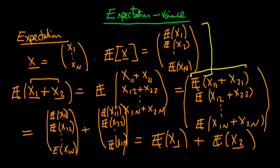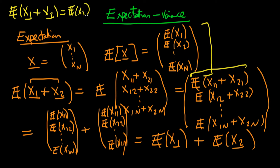That's quite a nice property for our expectations operator to have. To summarize: the expectation of the sum x1 plus x2 is equal to the expectation of x1 plus the expectation of x2, where x1 and x2 are random vectors.